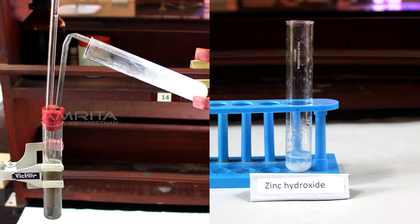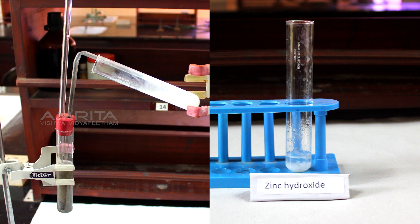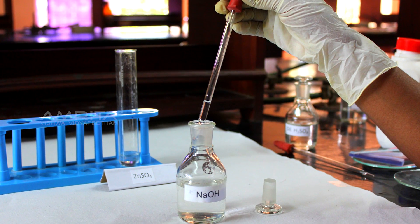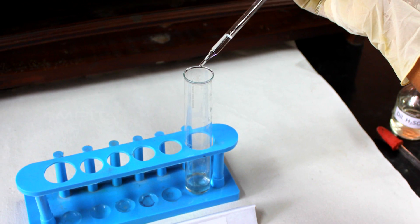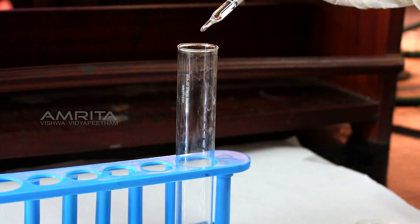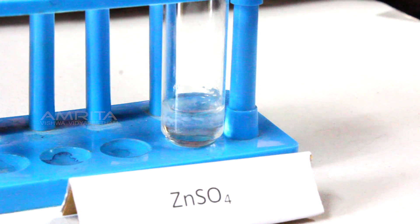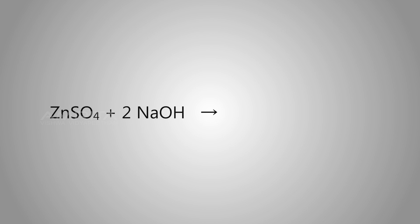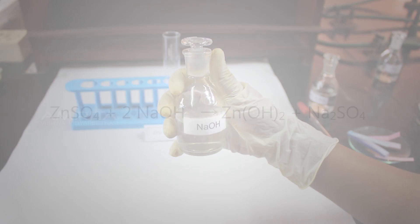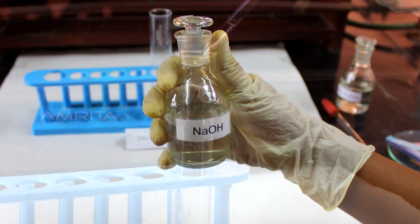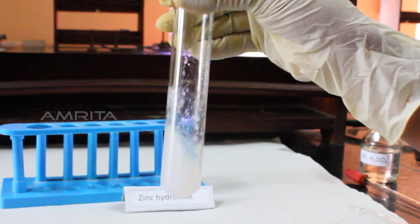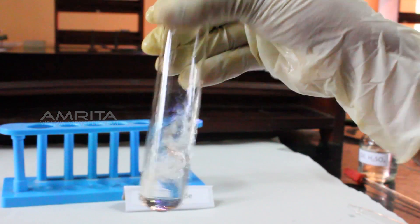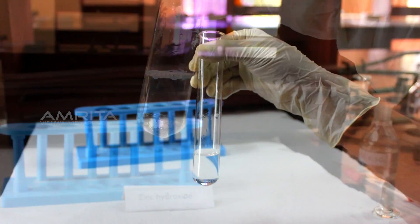We can do two tests to confirm the presence of zinc sulphate solution in this reaction. In the first test, add a few drops of NaOH solution into the boiling tube containing zinc sulphate using a dropper. On adding the NaOH, a white gelatinous precipitate of zinc hydroxide is formed. ZnSO4 + 2NaOH → Zn(OH)2 + Na2SO4. Again, add excess NaOH into this white precipitate and shake the boiling tube well. We can see that the precipitate dissolves on adding excess NaOH.